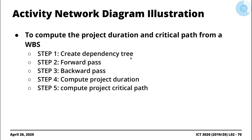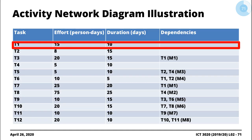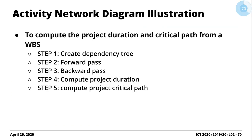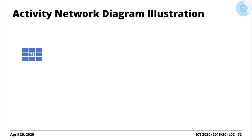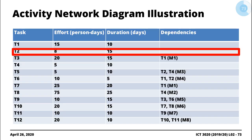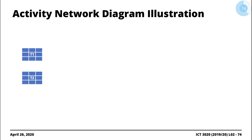We start building the dependency tree task by task. For the dependency tree, the only inputs needed are the task ID and its dependencies. Task one has no dependencies, so we write a block T1. Task two also has no dependencies, so we put the block for task two.